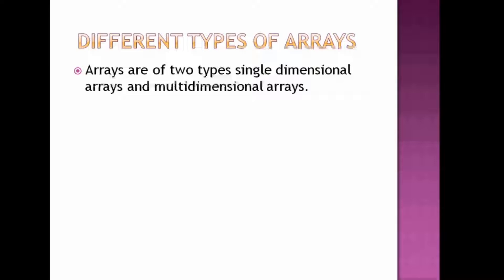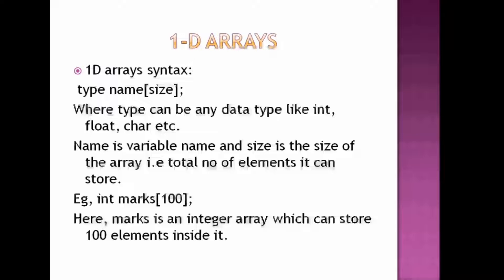So let's see the one-dimension array syntax — how an array is declared. The syntax is very simple. We write the data type first — this can be integer, float, or character — then the name of the variable. Then in square brackets, we mention the size of the array. For example, if we write 10, then this array can store 10 elements.